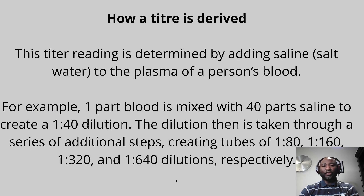The titer is derived by adding saline to the plasma of the patient's blood. The plasma — the liquid portion of blood containing all the autoantibodies — is separated from red blood cells. It's a question of diluting serially: one in 40 means you diluted 40 times before you could get rid of the autoantibodies; one in 80 means you diluted 80 times; one in 320 means you diluted 320 times. The number of dilutions gives you the actual titer strength.